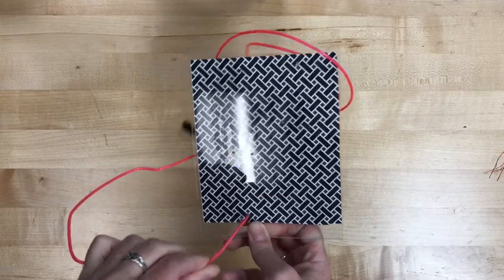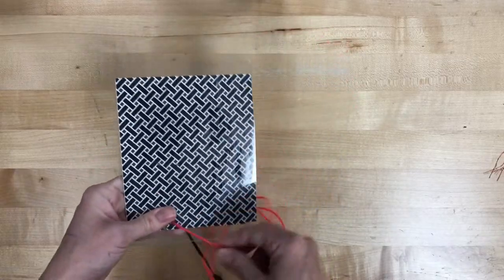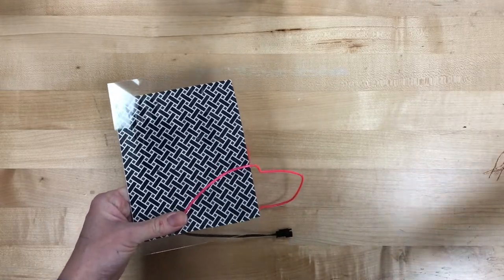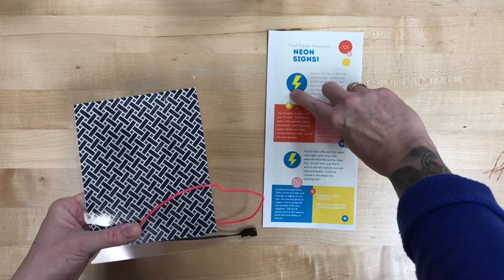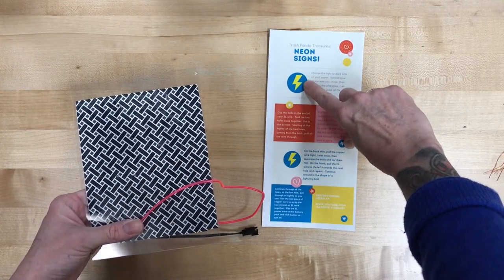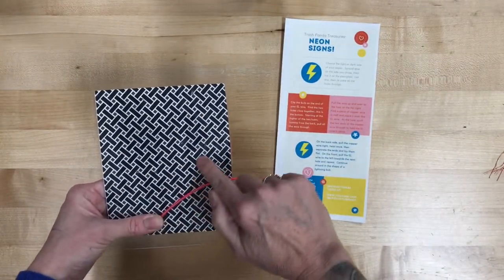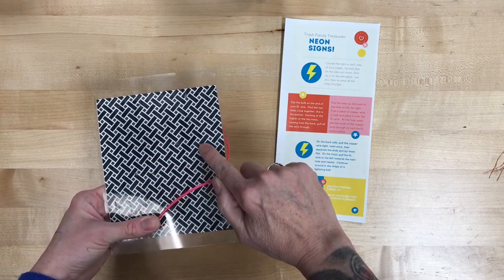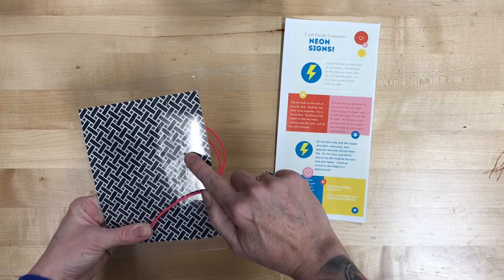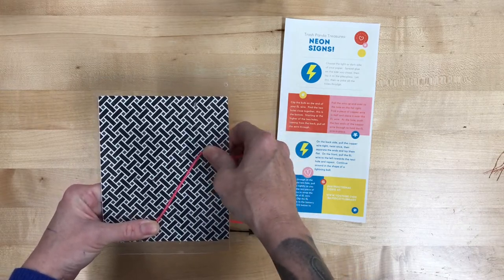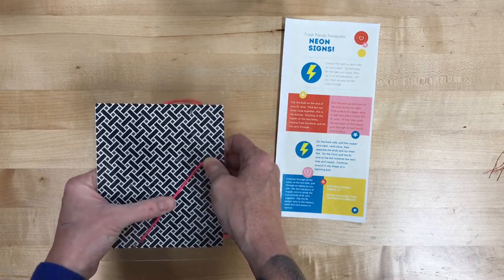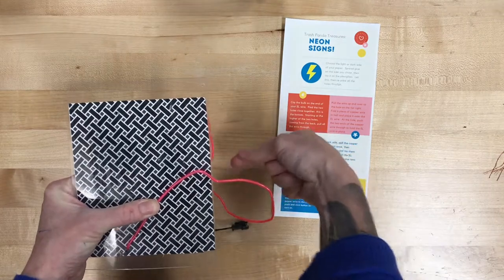And we are going to put our wire in the shape of a thunderbolt. So if you look on your instructions you can kind of see the shape that we're going for and we're coming from the bottom to do a short diagonal up to the right-hand side. So find the hole that's all the way over to the right and you're gonna pull your wire up to that hole keeping it as flat as you can. It won't be completely flat and that's okay.